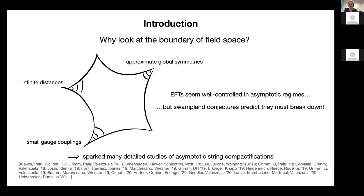But if we look at it through a swampland lens, we expect that some things might break down. For instance, we might have traveled a large field distance to get there, so we expect some kind of tower of states or potential strings, or we might have gained some approximate global symmetries by moving here. And all these things should be forbidden by quantum gravity. In the last couple of years, this led to a series of very nice papers where they took exactly this approach — they moved in their effective field theories to the boundary of field space and tried to identify what kind of quantum gravity effects causes the breakdown of these theories.